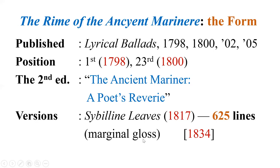In the second edition of Lyrical Ballads in 1800, the poem was moved to the 23rd position, one before the last. This was asked in a NET exam: in the second edition, what is the position of The Rime of the Ancient Mariner? The answer is 23rd. There are totally 23 or 24 poems in that edition. The third edition was 1802 and the fourth edition was 1805.